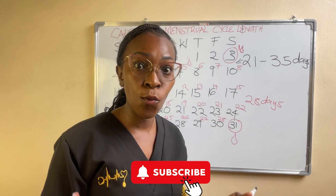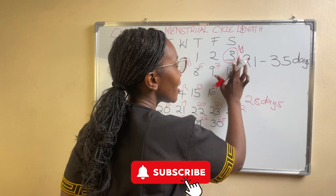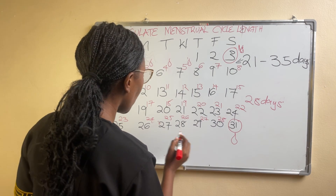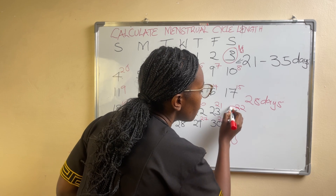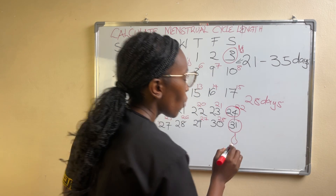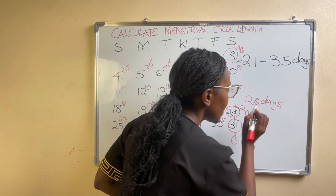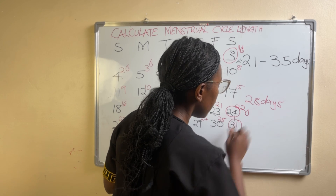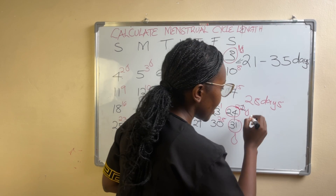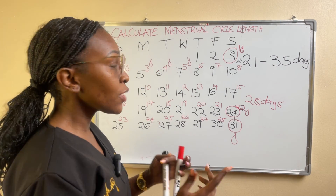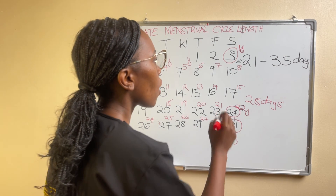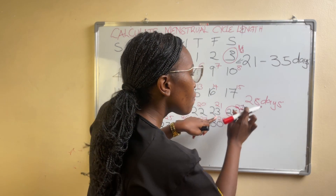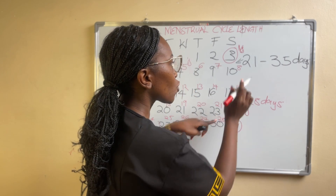Now let us look at another woman who started her period on day one here, but then her next period started on day 24. So she starts bleeding on day 24 — that is day one of her next cycle. So the menstrual cycle length runs from day one of her period to the last day before her next period, which is the day before day 24.